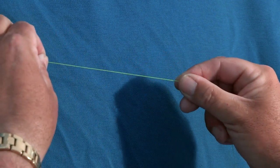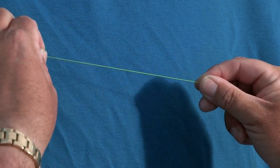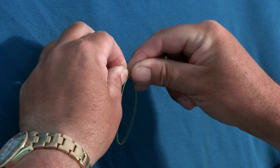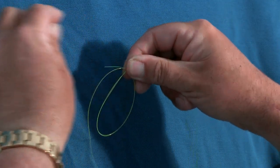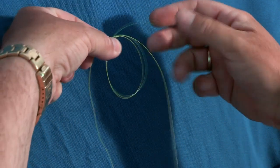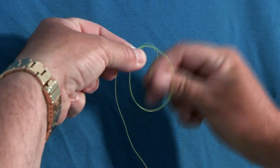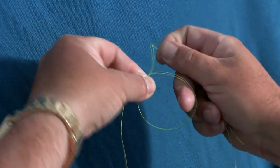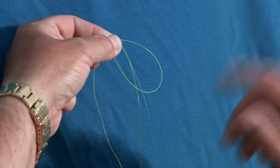What you do is, as if you want to start a surgeon's knot, create the loop and just nip it there like you normally would. With a surgeon's knot you then pass that through there three times. With this, just nip it behind but don't put it through.